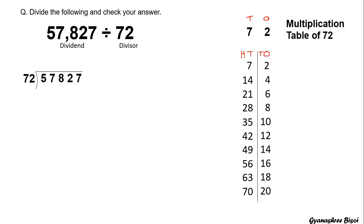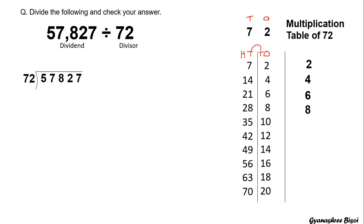Here we have only one 1's place column. But we have two 10's place columns. Since we have only one 1's place, we will just copy the 1's place digits into the 1's place in the multiplication table of 72. So: 2, 4, 6, 8 — we copy the 1's place digits and cancel the ones already written.